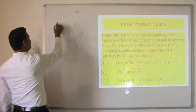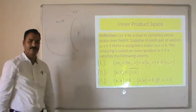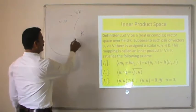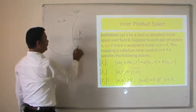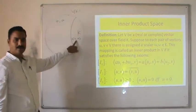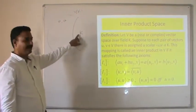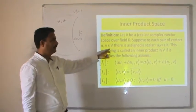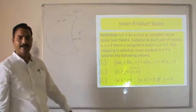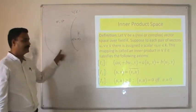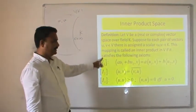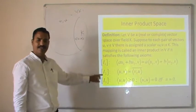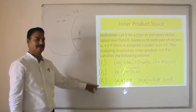For the definition of inner product: let us consider the vector space V over a field K, where K may be real or complex. For each pair of vectors u and v belonging to V, there exists a scalar denoted by the inner product symbol, which is a member of K. This mapping is called inner product if V satisfies three properties: i1, i2, and i3.